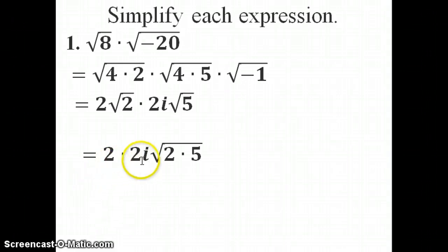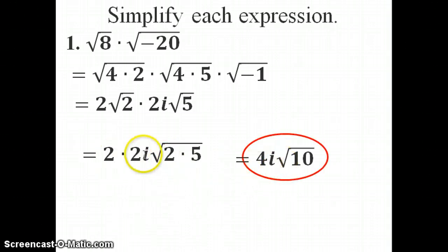2 times 2i would give me 4i. And then 2 times 5 would give me 10. So 2 times 2i gave me my 4i on the outside. And on the inside of the radical, it's just 10.